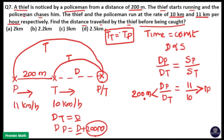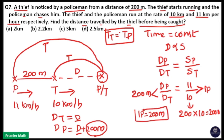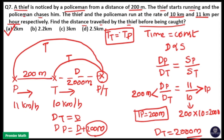Here, one part equals 200 meters. The distance traveled by the thief is 10 parts, so 10 parts equals 200 times 10, which is 2000 meters. Distance traveled by the police is 11 parts. So the answer is option A: 2 kilometers. The thief will travel a distance of 2000 meters and the police will travel 2.2 kilometers.